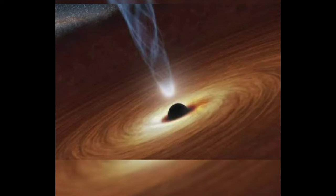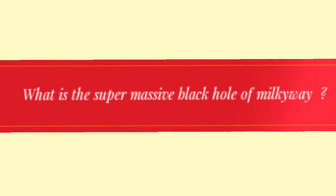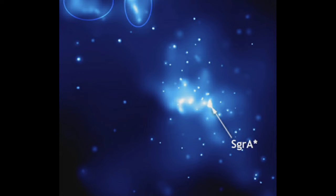What is the supermassive black hole of the galaxy Milky Way? Sagittarius A star. It is the supermassive black hole at the center of our galaxy and is four million times more massive than our sun.